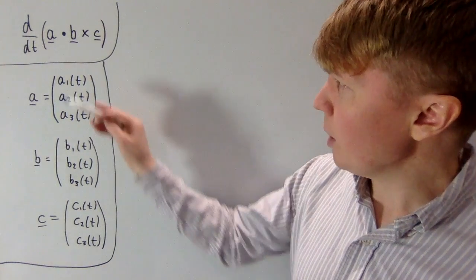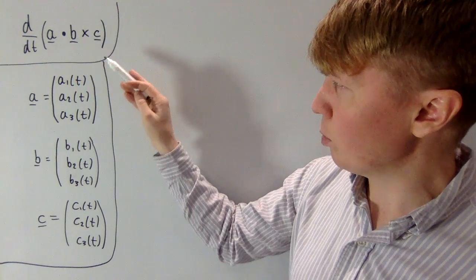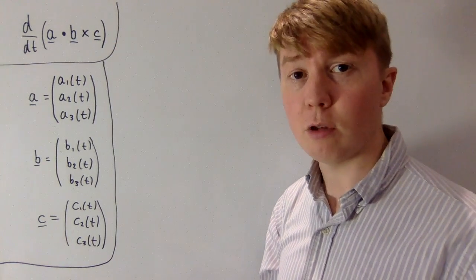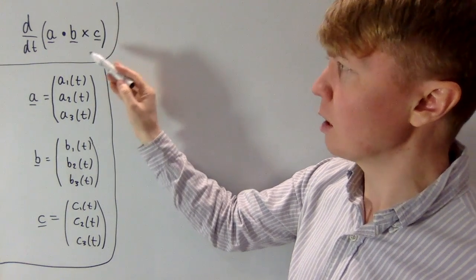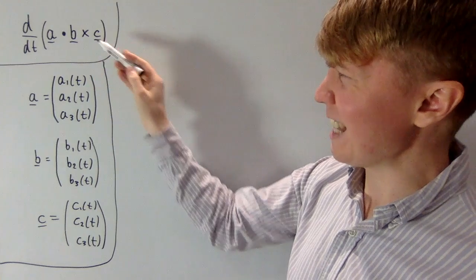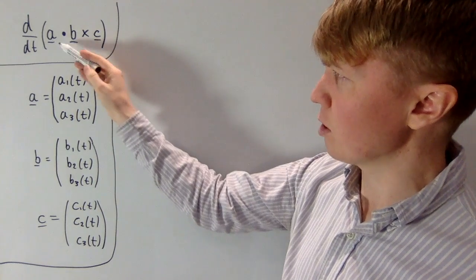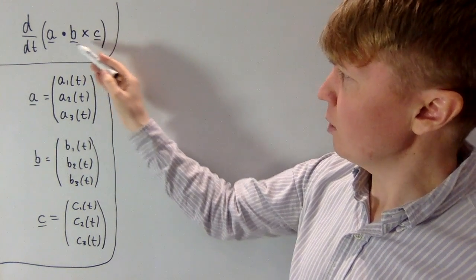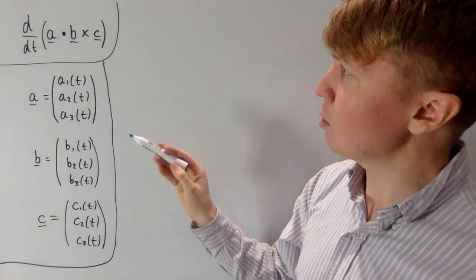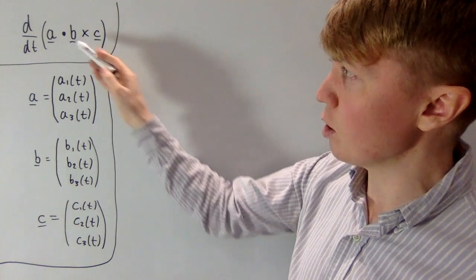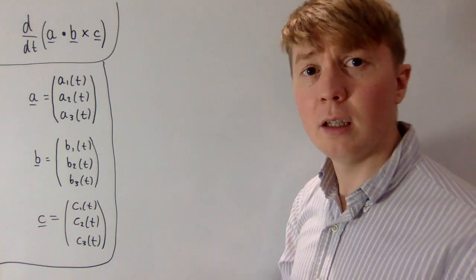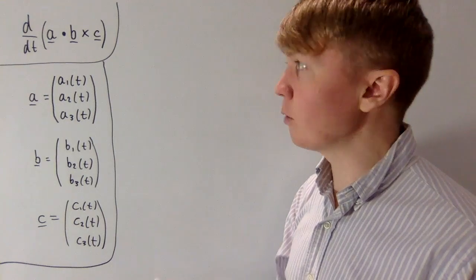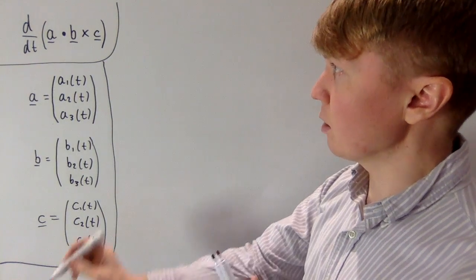If we were to differentiate the scalar triple product, the first operation in evaluating it is b cross c — you can't do the dot product first and then take the cross product of a scalar and a vector. So imagine you've evaluated b cross c, then you would look at the dot product of a with that. The first thing we'll actually look at is the derivative of the scalar product of two vectors.